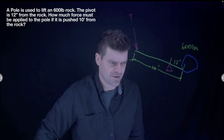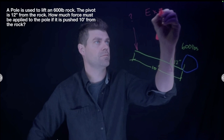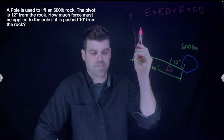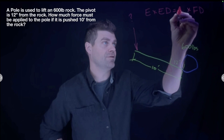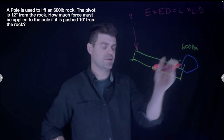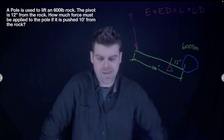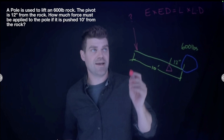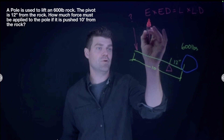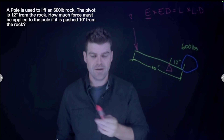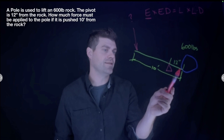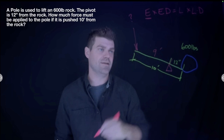The formula is: Effort × Effort Distance = Load × Load Distance. Another way to write it: Effort = (Load × Load Distance) ÷ Effort Distance. The load is 600 pounds. The effort distance is always measured from the fulcrum — not from the rock. The question says 10 feet from the rock, but since the fulcrum is 12 inches (1 foot) from the rock, that means the effort distance from the fulcrum is actually 9 feet.